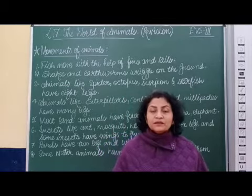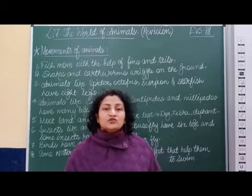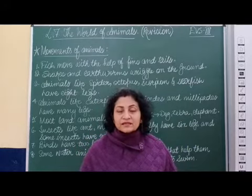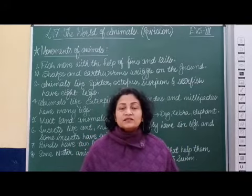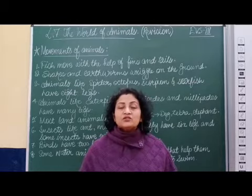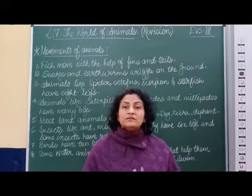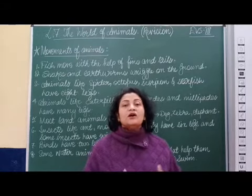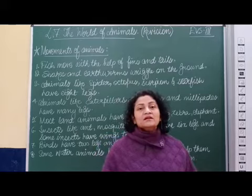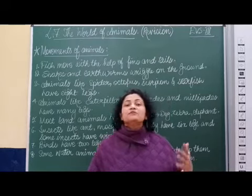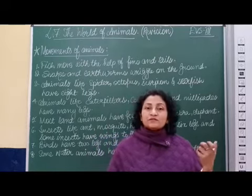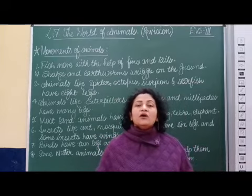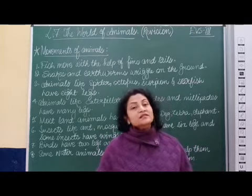If you talk about human beings, they have two legs and they can move from one place to another. But what about animals? When we talk about the animal kingdom, we are talking about big animals, small animals, very small animals and tiny animals — different types of birds, insects, land animals, water animals, or animals that can fly.